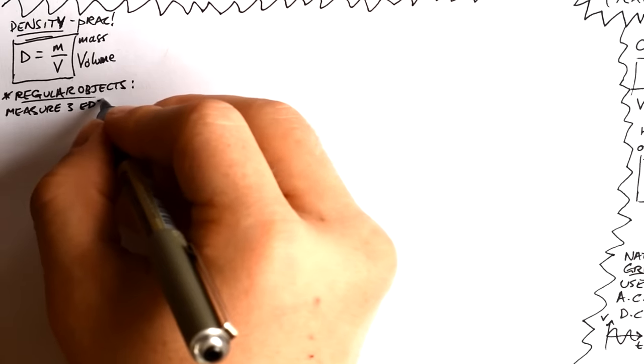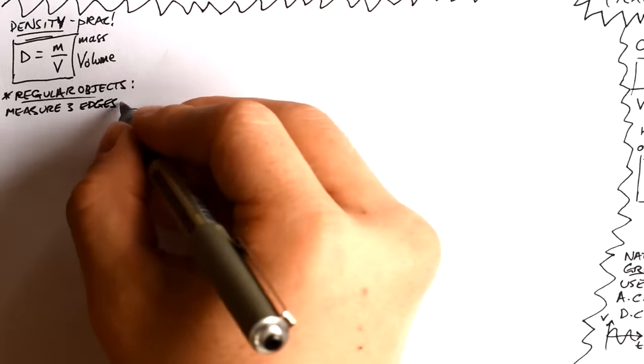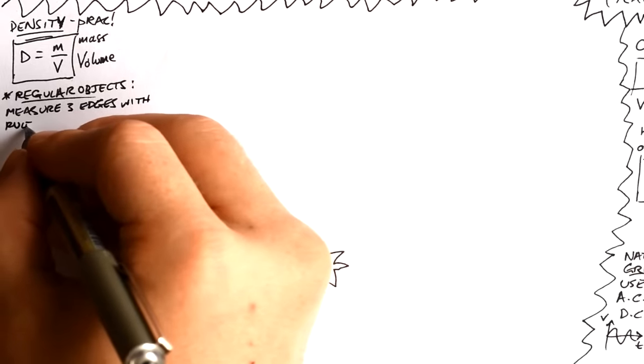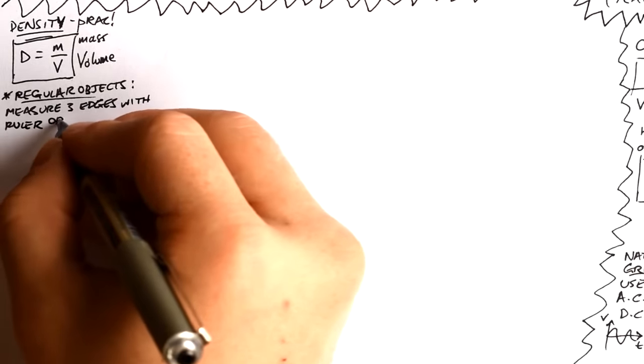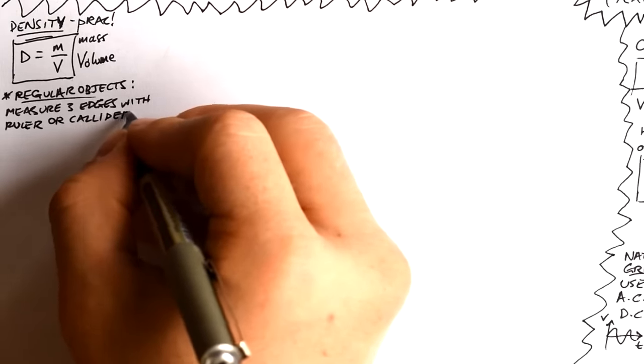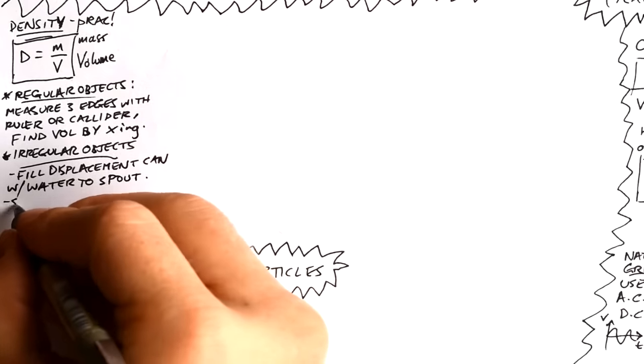This is a required prac. This is one they like asking questions about. If we have regular objects, that means ones whose volumes can be calculated by measurements. If it's a rectangular prism, just like a normal block, then we measure the three edges with a ruler or a caliper, and we find the volume by times in those together.